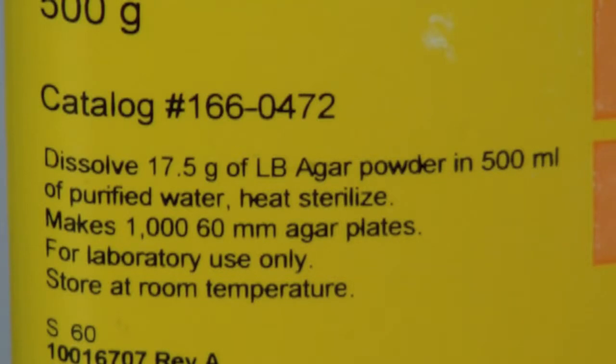The recipe calls for dissolving 17.5 grams of LB agar powder in 500 milliliters of purified water to make 1,060 millimeter agar plates. This converts to using 3.5 grams of LB agar powder for the 100 milliliters of media we wish to prepare.